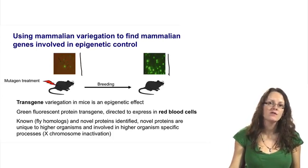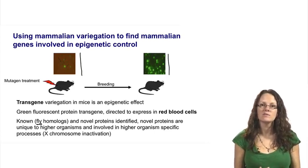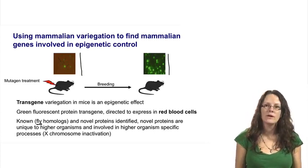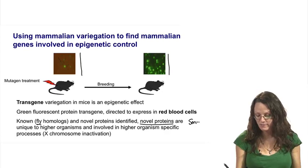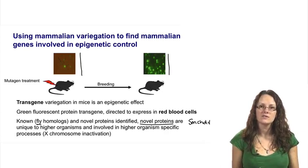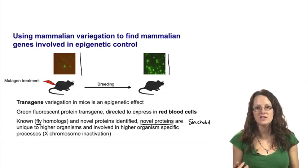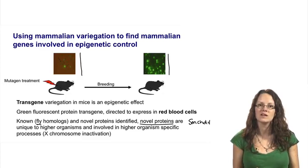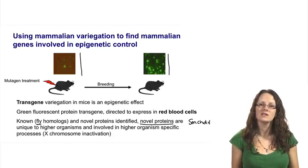As expected, many homologues of the fly proteins important in epigenetic control were found, confirming the screen was working. But importantly, the screen also identified novel proteins, in particular SMCHD1, which I mentioned earlier. These novel proteins are unique to higher organisms and are involved in epigenetic processes which only happen in higher organisms. SMCHD1, as you may remember, is important in X inactivation. Through these screening approaches using variegated expression, we can find novel genes important in epigenetic control and deepen our understanding of how this exciting process occurs.